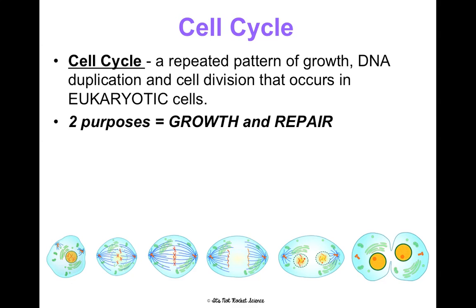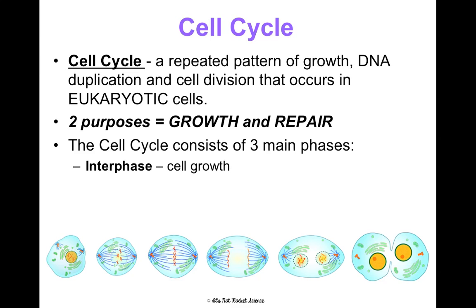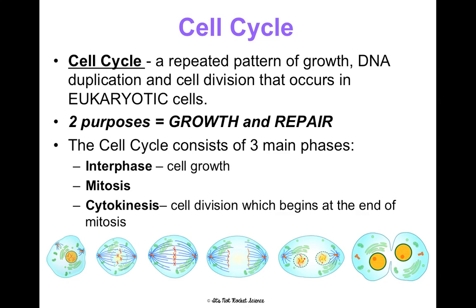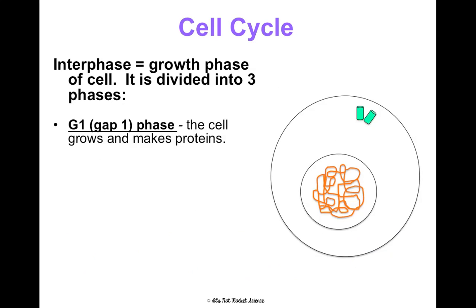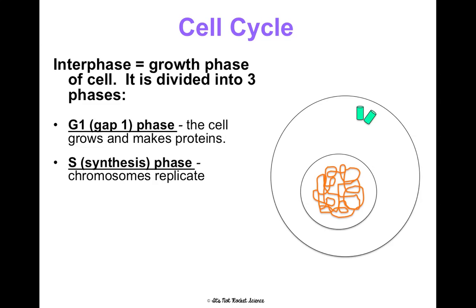The purpose is for growing and repairing, and there are three main phases: interphase, mitosis, and cytokinesis. Interphase is the growth phase and has three subphases. G1 or Gap 1 is when the cell is growing and making proteins. S or synthesis is when the chromosomes are replicating — this is so important, because if the chromosomes don't replicate and the cell divides, the resulting cells would have half the number of chromosomes, and your DNA runs your cell. The S phase doubles the DNA so every cell gets what it needs.